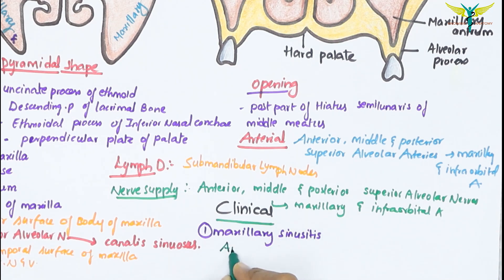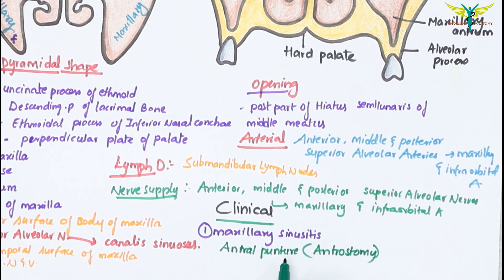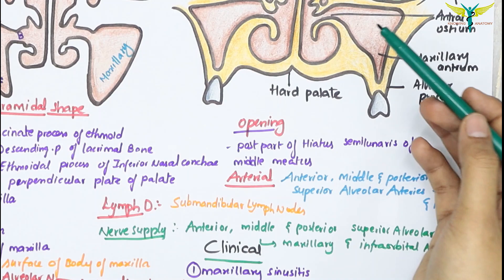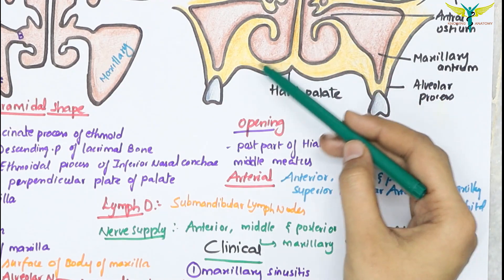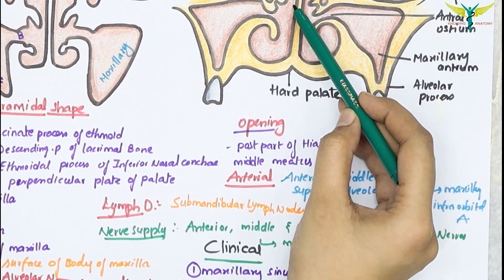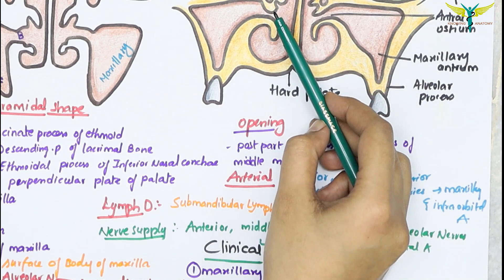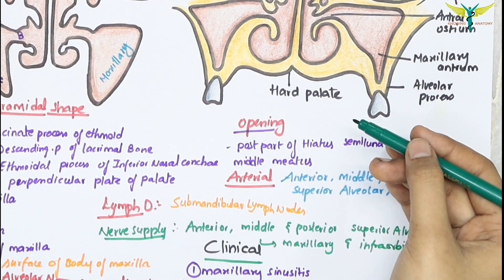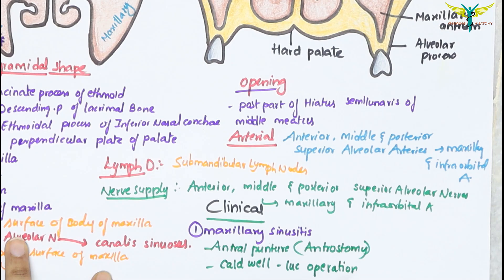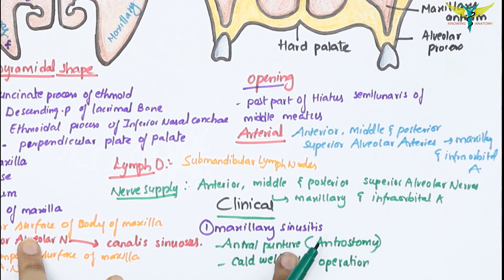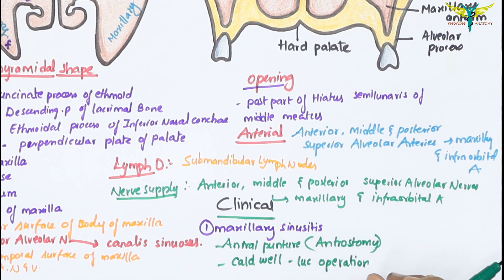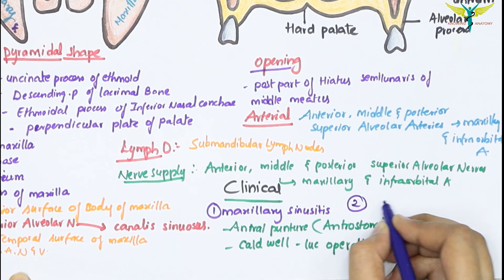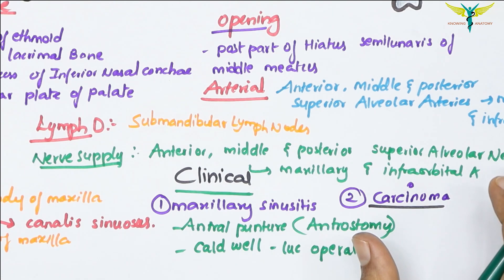The drainage of the maxillary sinus is by antral puncture or anterostomy, and by fenestrating the antrum through the canine fossa in the gingivolabial sulcus, which is called the Caldwell-Luc operation. The opening of this sinus is unfortunately located in the upper part of the lateral wall of the nose, which is a disadvantageous site for adequate drainage. Surgically, the antral puncture is done by a trocar and cannula which are passed below the inferior nasal concha in an outward and backward direction.